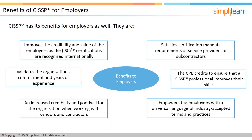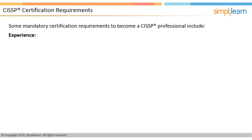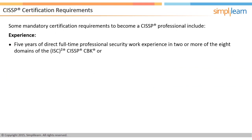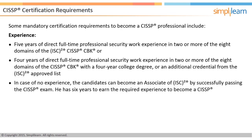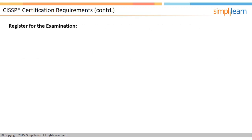CISSP certification requirements include obtaining the required experience: five years of direct full-time professional security work experience in two or more of the eight CBK domains, or four years with a four-year college degree or additional credential from the ISC² approved list. Candidates with no experience can become an Associate of ISC² by passing the CISSP exam, with six years to earn the required experience.